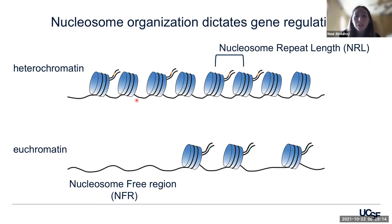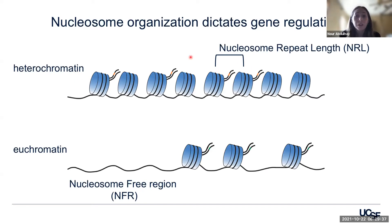I wanted to start by showing this Beads on a String cartoon of nucleosomes positioned along DNA. As you likely know, nucleosome positioning and occupancy are extremely important as they either provide or block accessibility to different gene regulatory factors. Heterochromatin typically consists of compact nucleosomes and fixed nucleosome repeat lengths, creating a generally transcriptionally inactive genome subcompartment, whereas euchromatin consists of lower nucleosome density with irregular NRLs, and these nucleosome-free regions or NFRs promote transcription factor binding, rendering a generally transcriptionally active genome subcompartment.